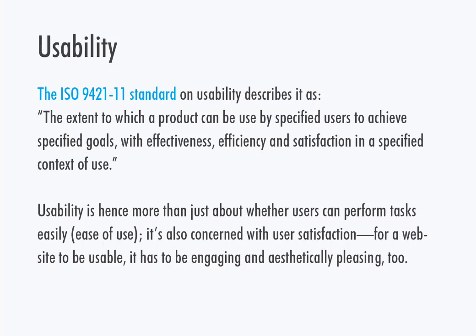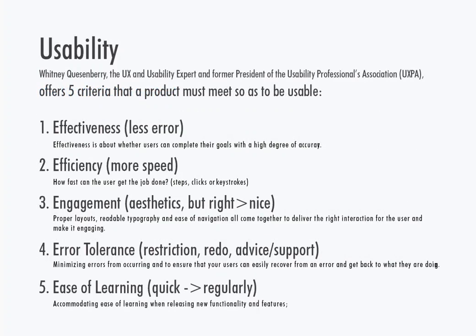Of all those factors, usability is the most important criteria when it comes to designing and using a product. The ISO standard on usability describes it as: the extent to which a product can be used by specified users to achieve specific goals with effectiveness, efficiency, and satisfaction in a specified context of use. Usability is hence more than just about whether users can perform tasks easily — it's also concerned with user satisfaction. For a website to be usable, it has to be engaging and aesthetically pleasing.